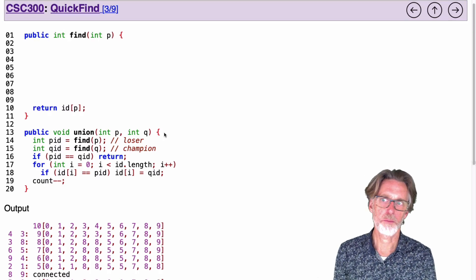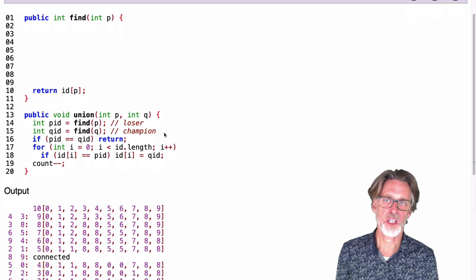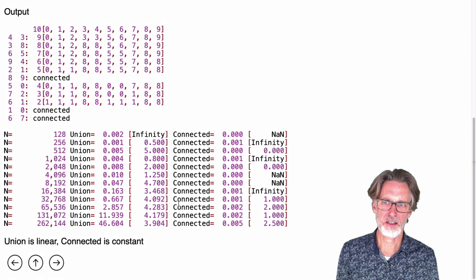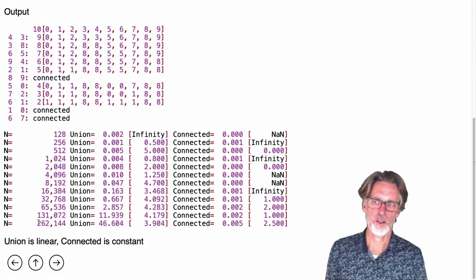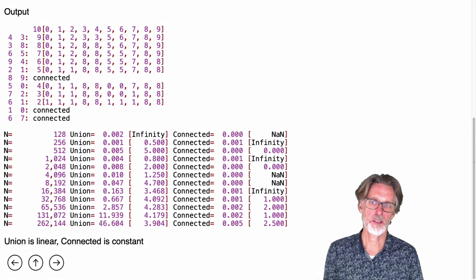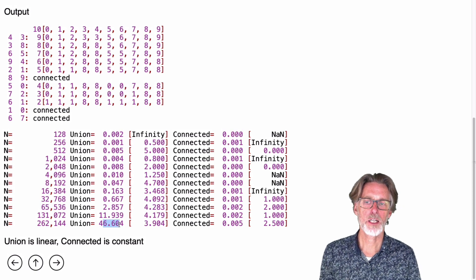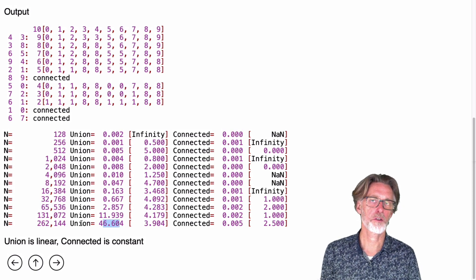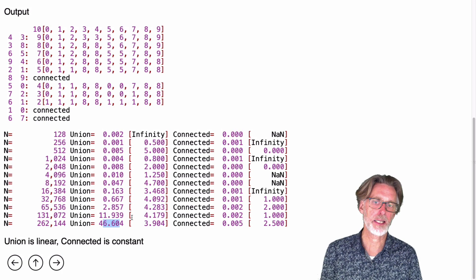So the quick find algorithm is great, it works, understandable, but we noted that it had a real performance problem. For 260,000 elements, it's taking me 46 seconds to union all those together this time I ran it.